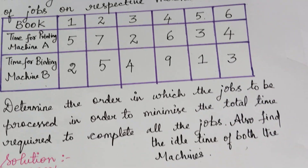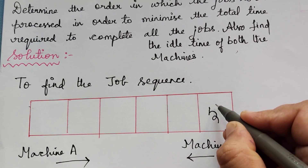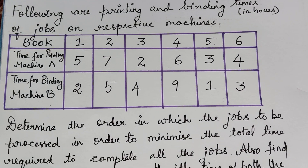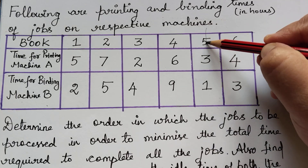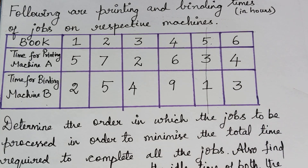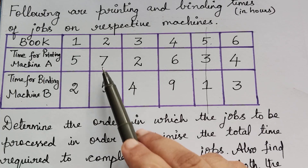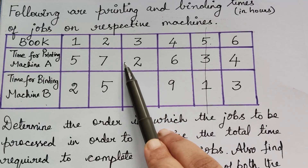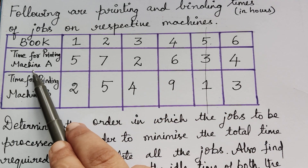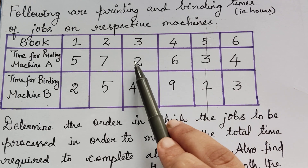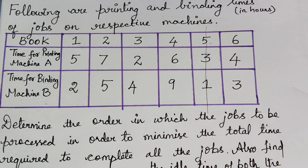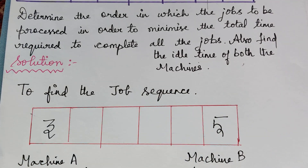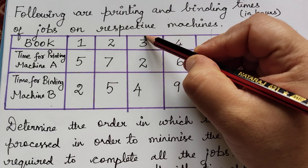So job 5 has to be written under machine B — we place job 5 there. Since we have completed it, we give it a strike so we know it is done. Next we look for the next least number. The next least number is 2, and it is under job 3 corresponding to machine A. So job 3 has to be written under machine A, and we give job 3 a strike.